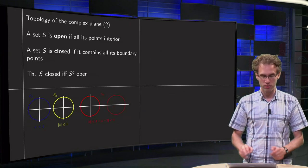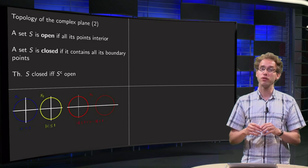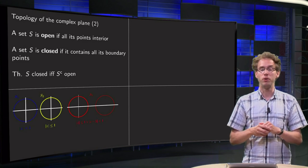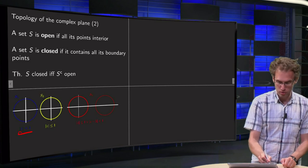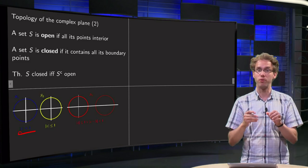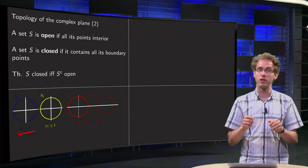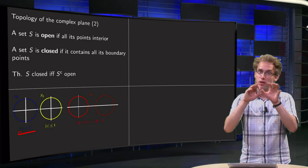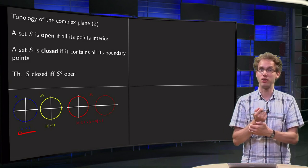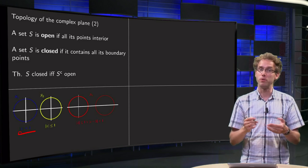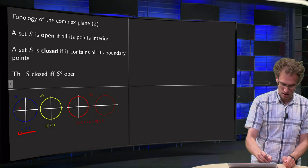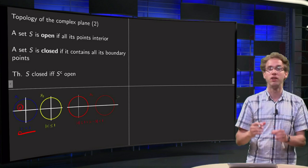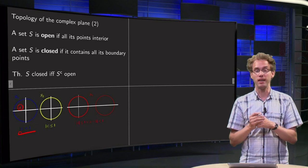Let's look at a few examples. First we have the open unit disk — the set of points where the norm is strictly smaller than one. We get the unit disk without its boundary in the complex plane. That's an open set because if you take any point inside here, you can make a small circle around it which is completely contained in the set.